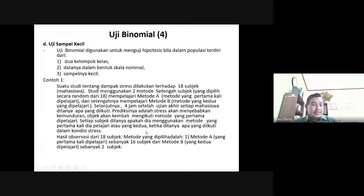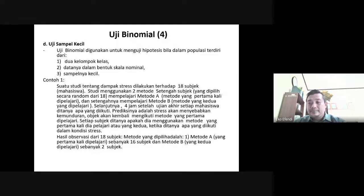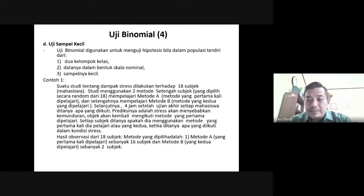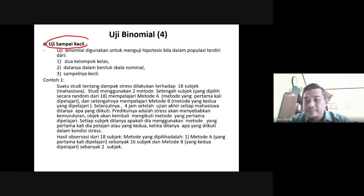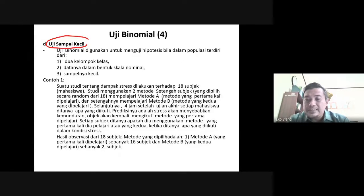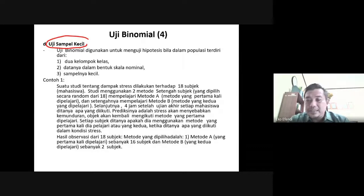Nah, bagaimana kalau uji itu dilakukan terhadap jumlah sampel yang berbeda? Yang pertama adalah uji jika kita menggunakan sampel kecil. Jadi uji binomial digunakan untuk menguji hipotesis bila dalam populasi terdiri dari: yang pertama adalah dua kelompok atau kelas, kemudian datanya dalam bentuk nominal, dan yang ketiga sampelnya kecil.